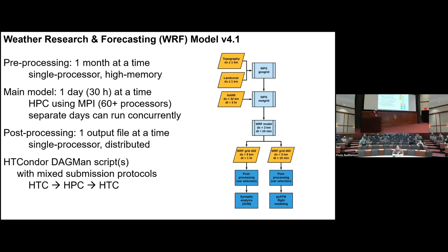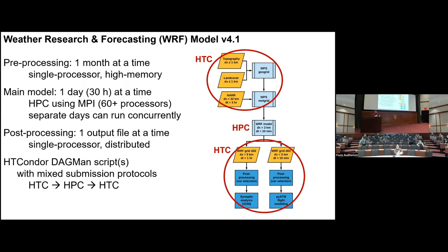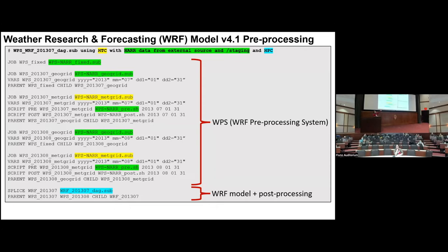Pre-processing can run on HTC resources — single processor but high memory load — and that takes up the top part of the workflow. The WRF model itself needs to run on the HPC system, so it feeds output from pre-processing as input to WRF, and then WRF output comes back to HTC for two different avenues of post-processing. This is a DAG to run the entire month of July 2013; running July 31st bleeds over into August 1st, so pre-processing on August is also needed. Input data for pre-processing comes from external sources and gets downloaded on the fly.